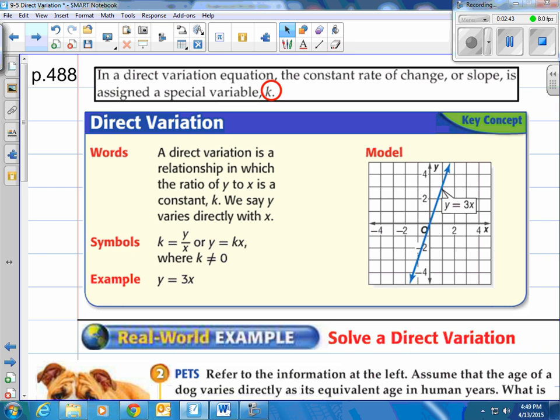Now in a direct variation equation, the constant rate of change or slope is assigned a special variable. So that constant of variation we're going to call k. In words what does that mean? Well it says a direct variation is a relationship in which the ratio of y to x is a constant k. We say y varies directly with x. In symbols for equations we have k is equal to y divided by x or y is equal to k times x where k is not zero.